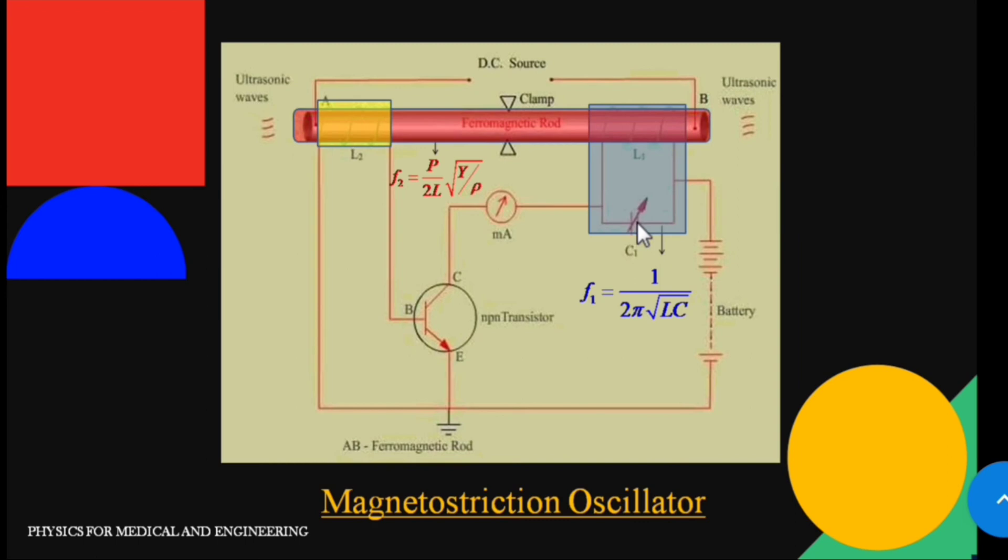If the frequency of the tank circuit matches with the frequency of the vibration of the ferromagnetic rod, that is if f1 equals f2, then resonance will occur and the ultrasonic waves are emitted from the ends of the ferromagnetic rod.